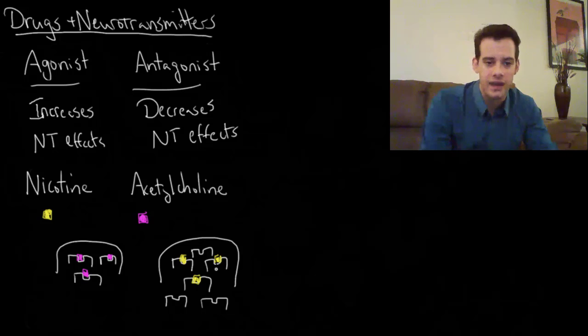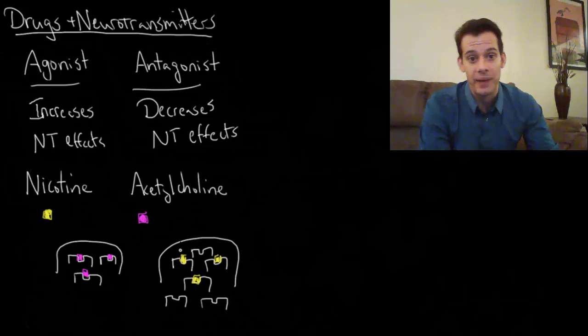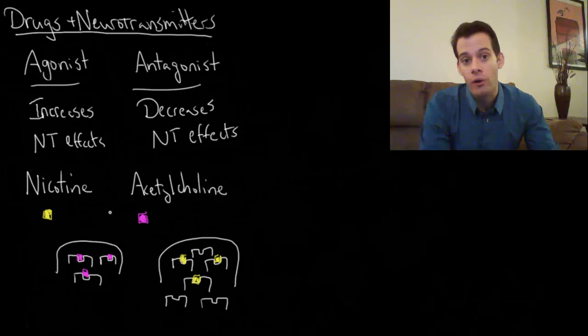It's going to say, okay, well if you keep firing all the time, I'm going to make it harder for you to fire. And what this means is now when we release acetylcholine, we might not have enough to actually cause this neuron to fire. We might not be able to do it on our own. And so now we're going to need the nicotine to be there to help out. And over time we're going to need more and more of that nicotine because we're going to keep making these neurons less and less sensitive to it.